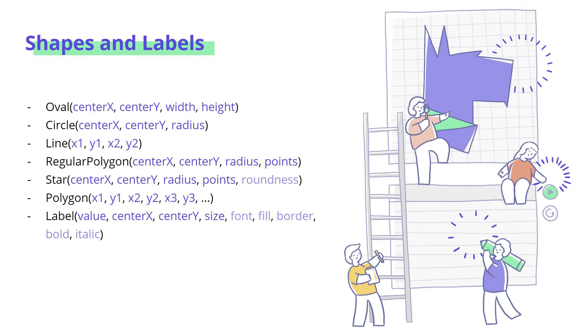Aside from rectangles, there are a lot of other shapes that the CS Academy graphics package can handle. There's oval, which takes in a center x, a center y, and a width and a height. We have a circle, which takes in center x, center y, and a radius.